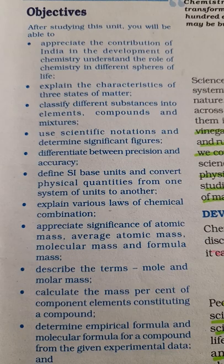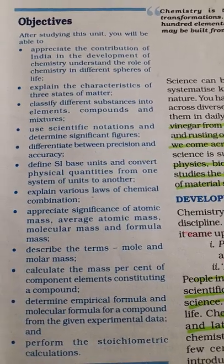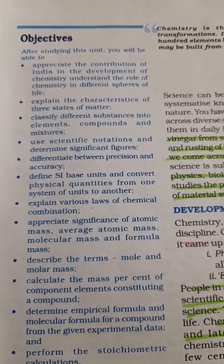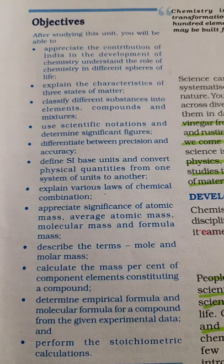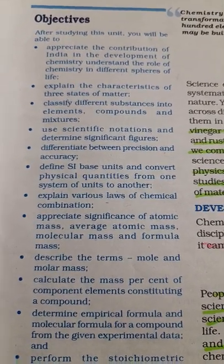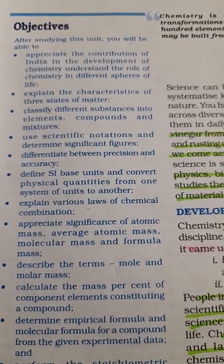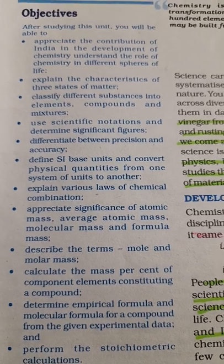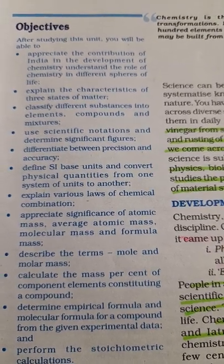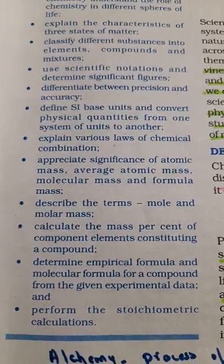What is the importance of atomic mass, average atomic mass, molecular mass, formula mass — all these things. What do you mean by molar and molar mass — this is very important because so many sums and applications based on this will come for the exams. Then, how do you calculate the mass percent of elements in a compound, like water which contains hydrogen and oxygen. What is meant by empirical and molecular formula, and how do you perform stoichiometric calculations.